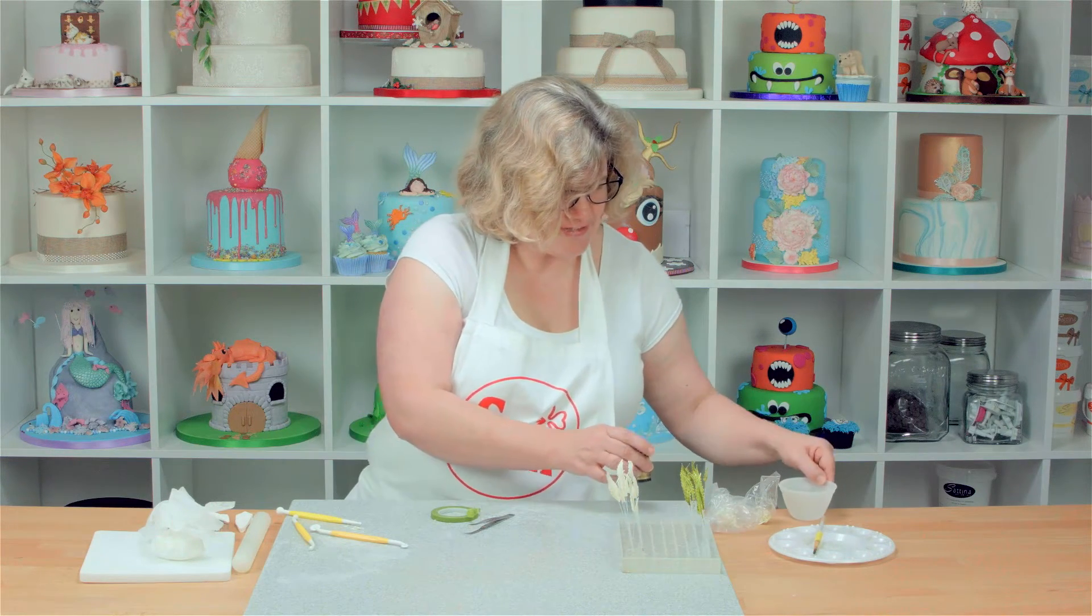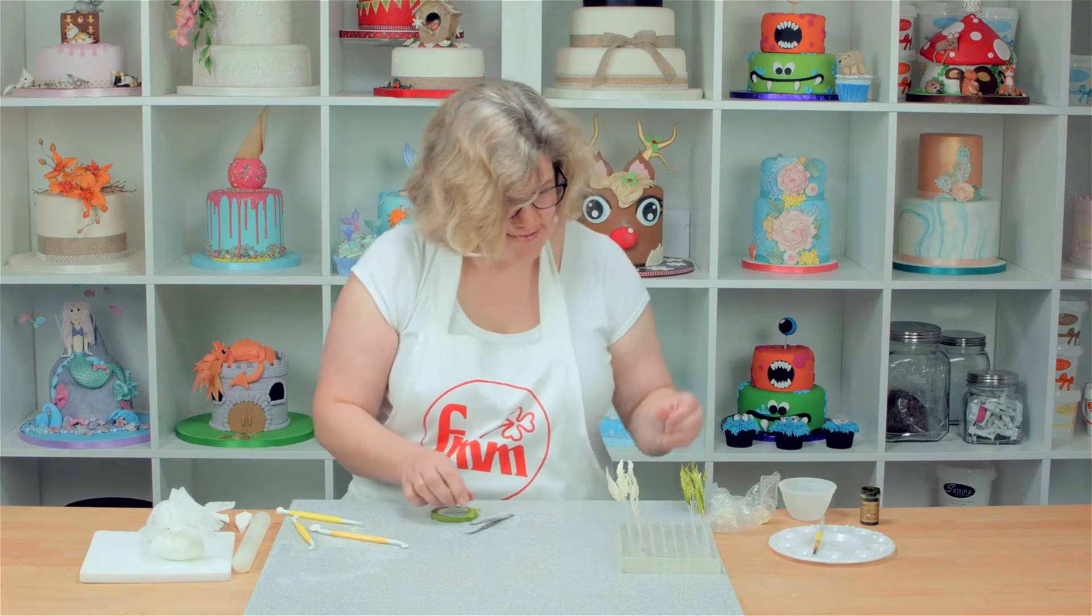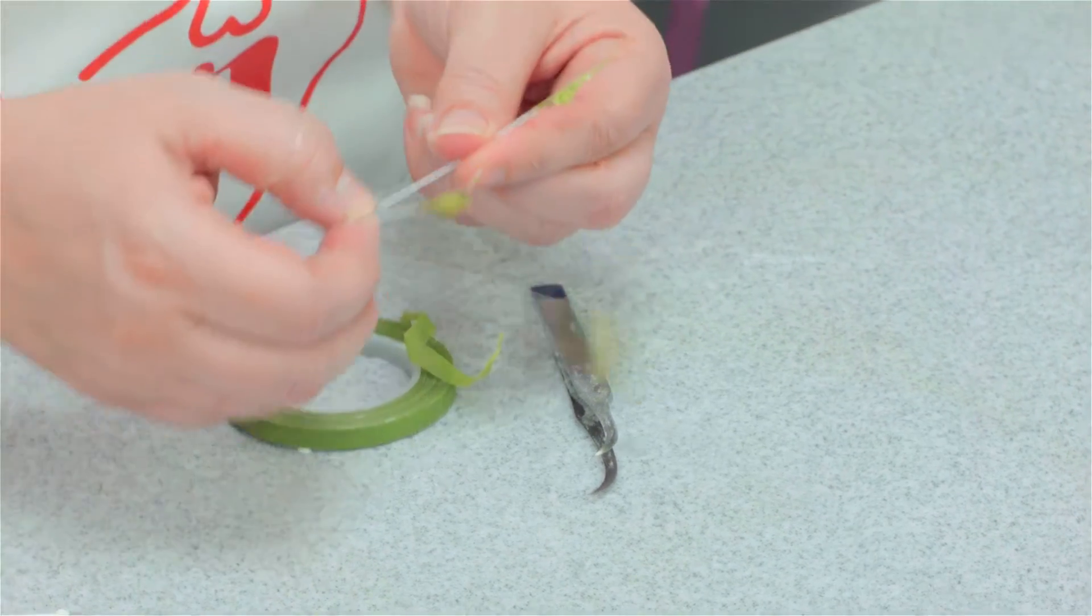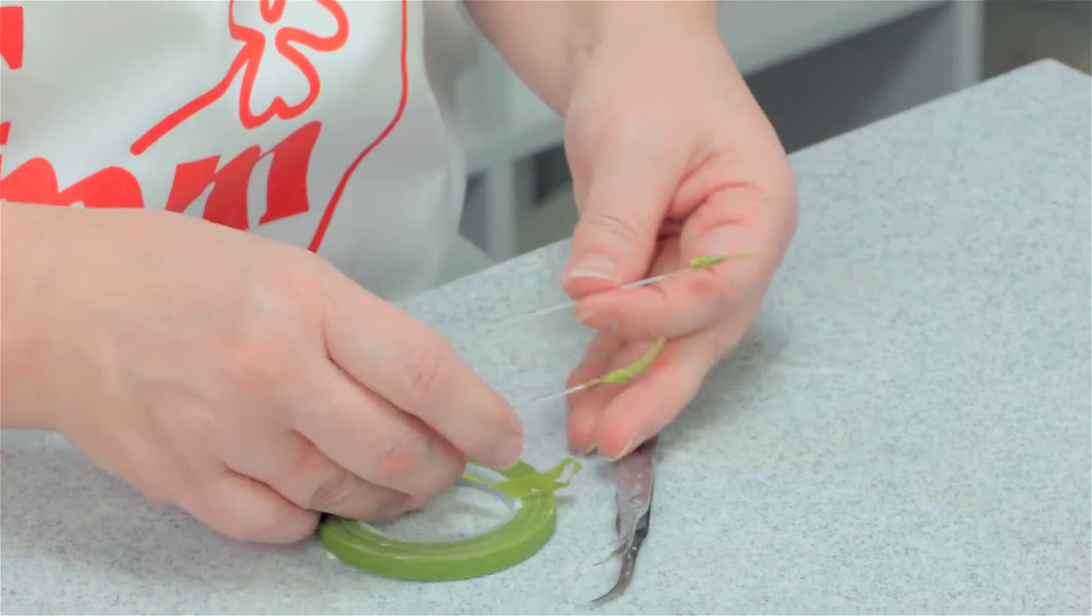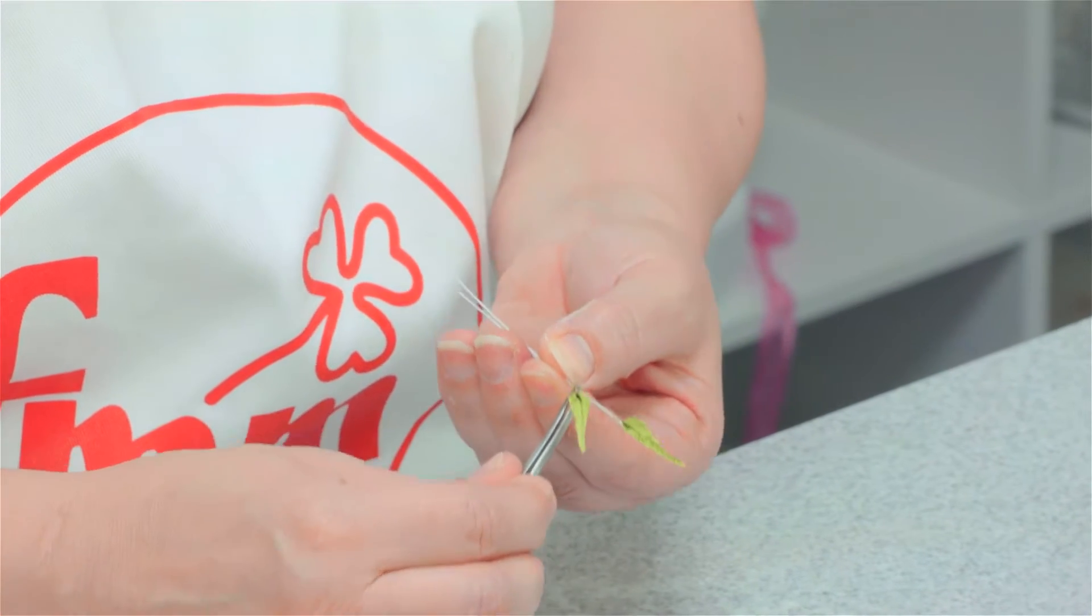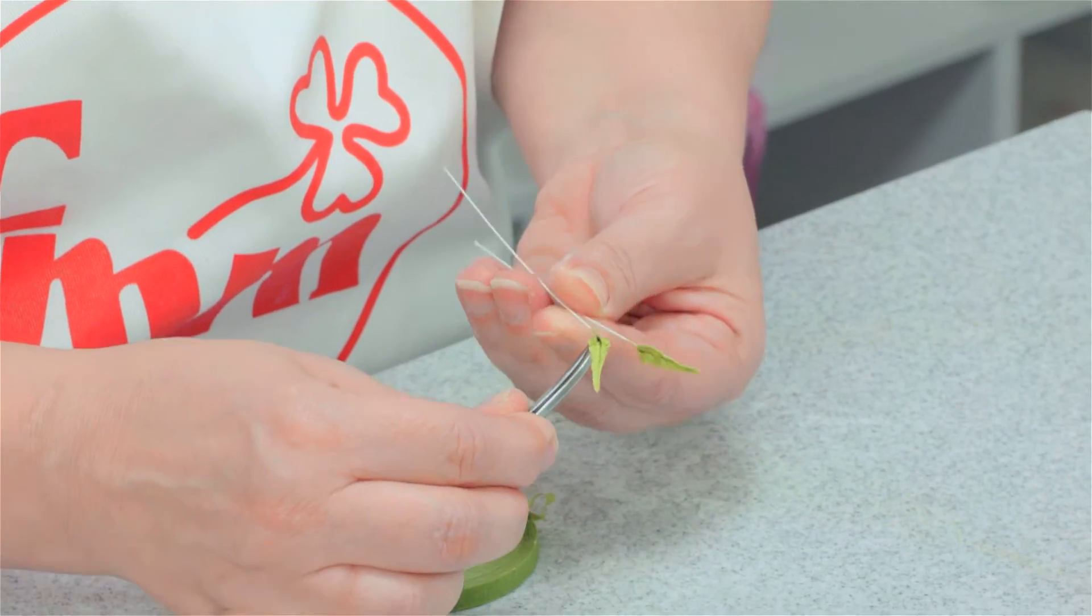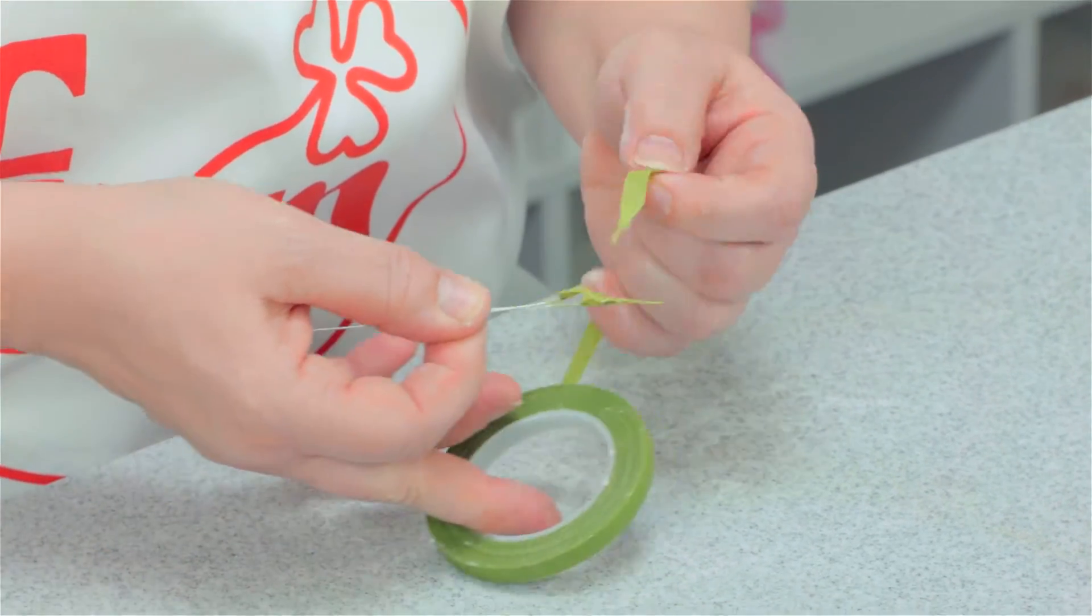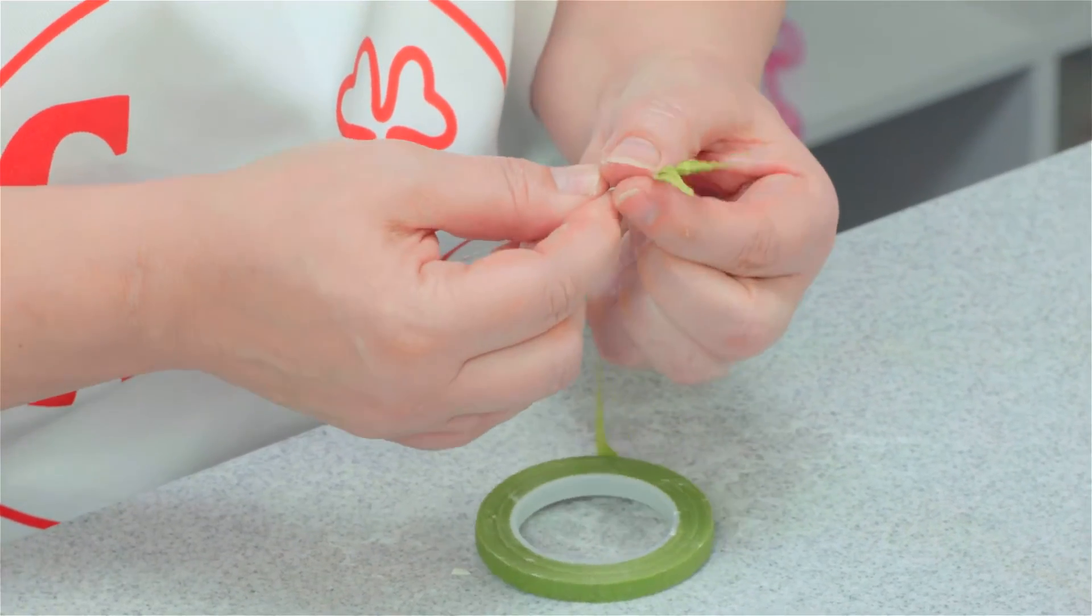My first few that I've got in the stand here are dry so I can start putting them together. You need to take the center one and then they need to go alternately on either side. I'm bending with a pair of tweezers just to bend it out to one side, and then I start taping.